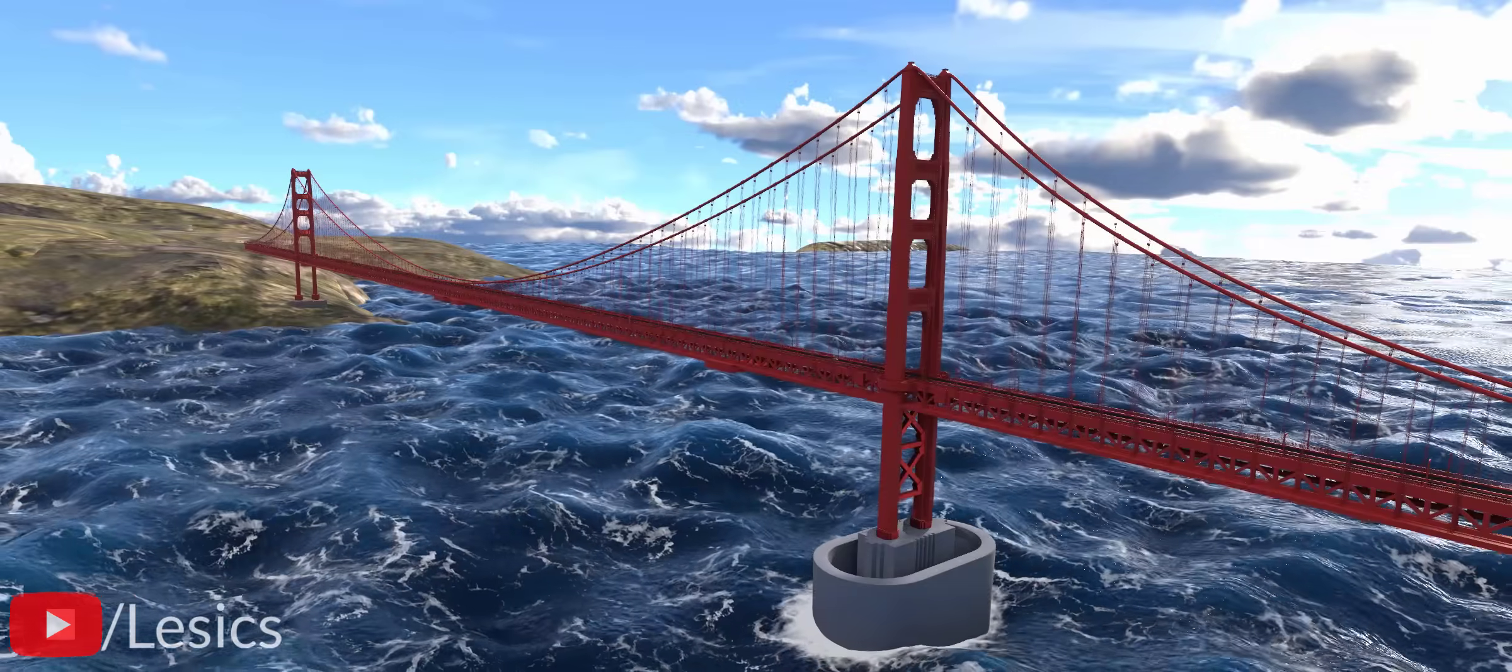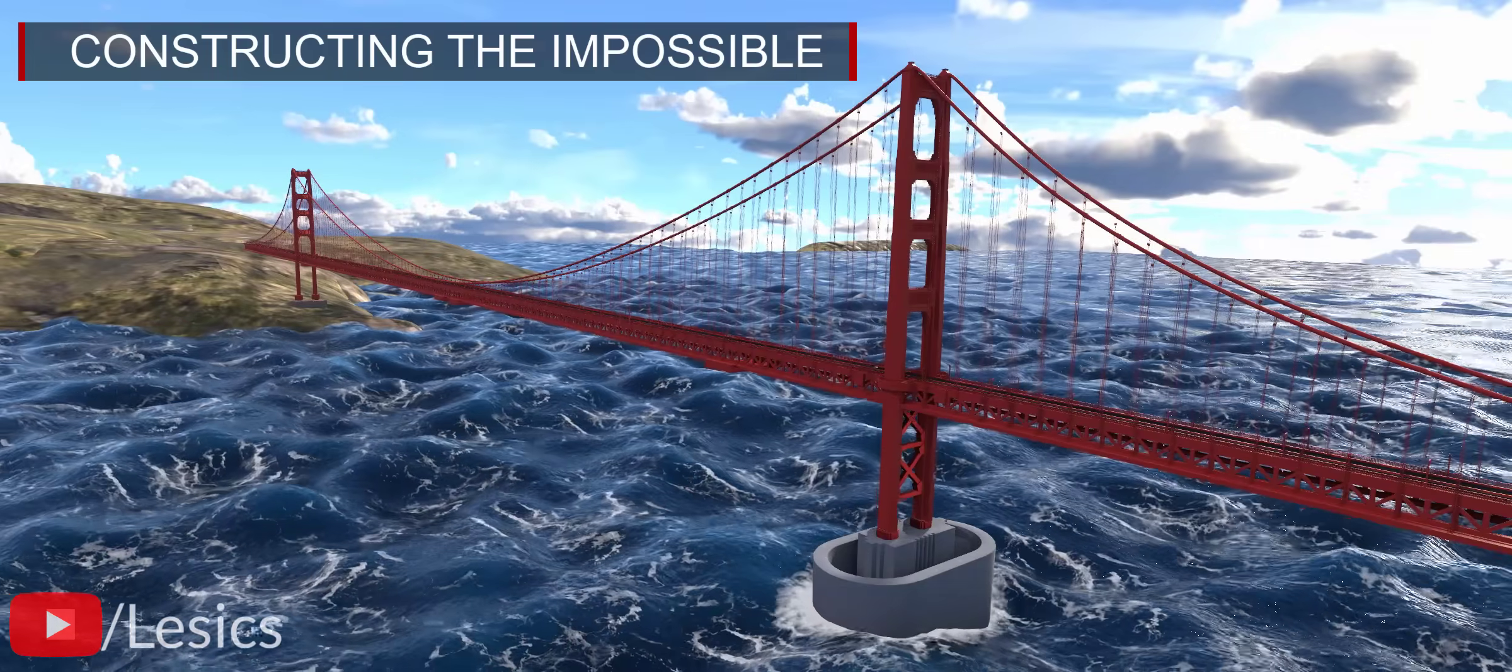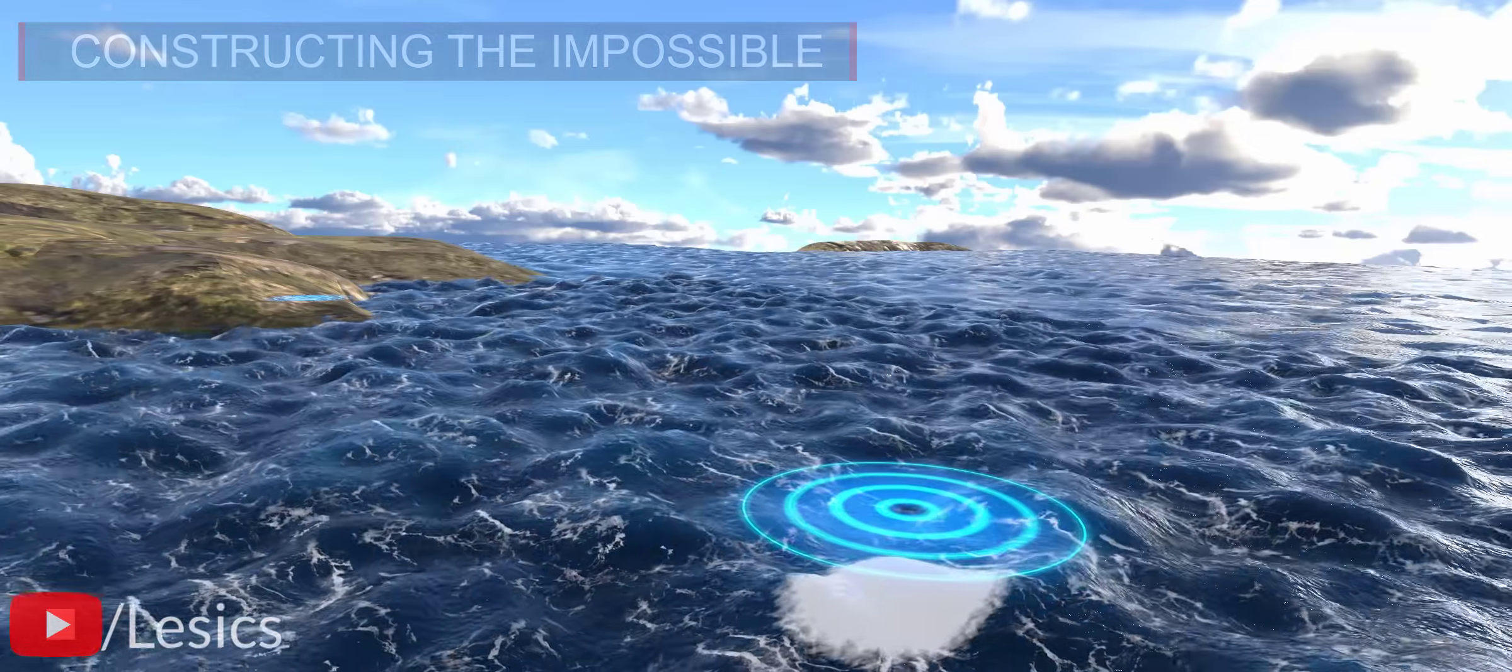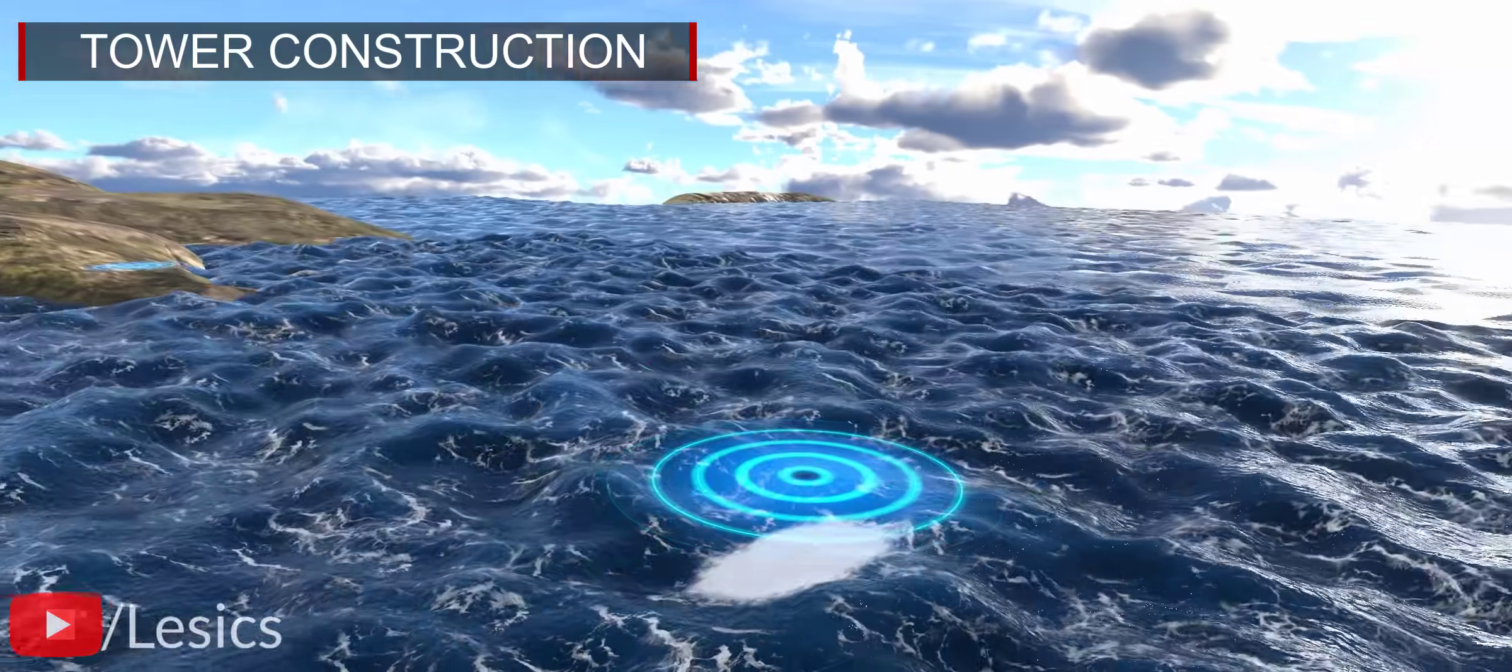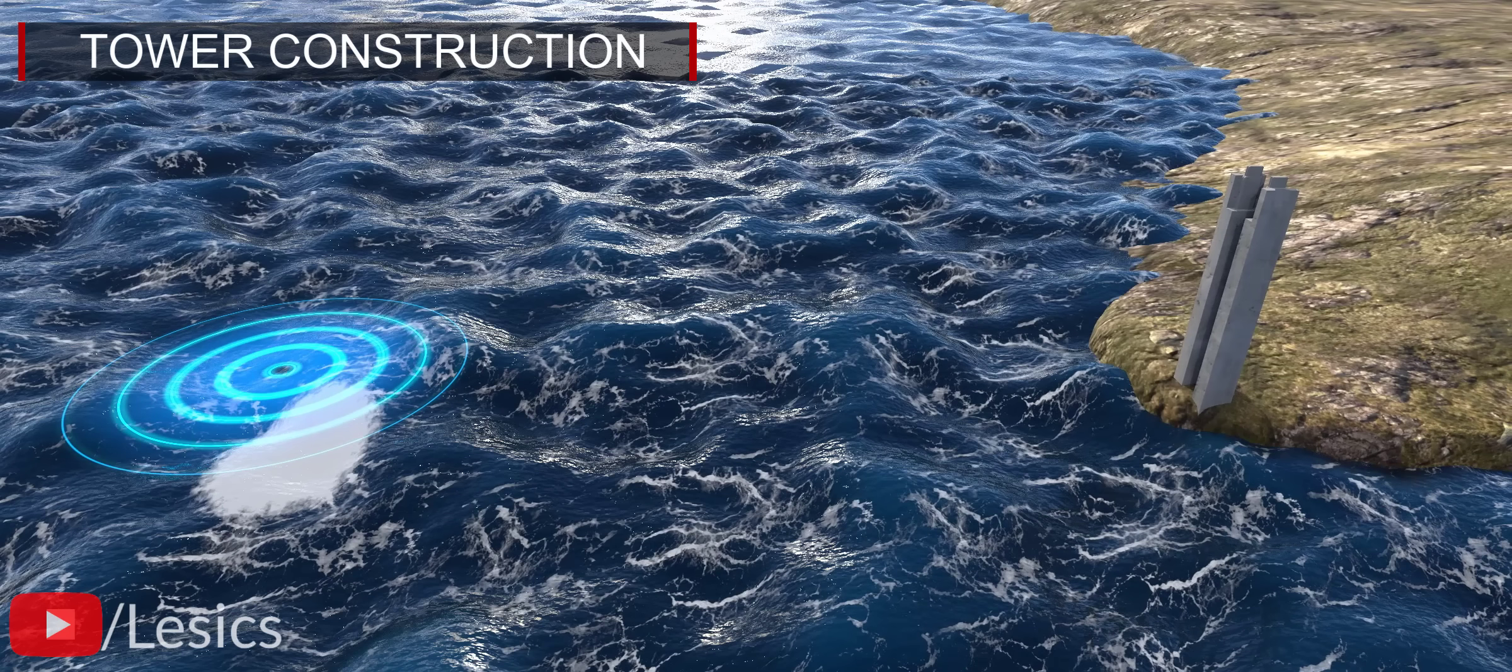Now, let's get into the most exciting part of this video: construction of the Golden Gate Bridge in a hostile environment. First, we start with the tower construction. Did you know the construction of the south side tower was tougher than the north tower? This is because the south tower construction had to overcome the violent Pacific Ocean.